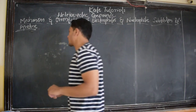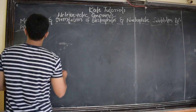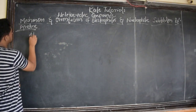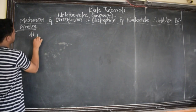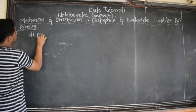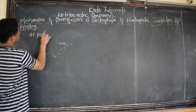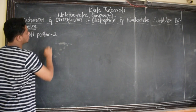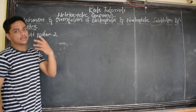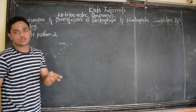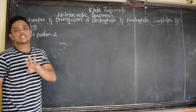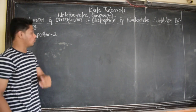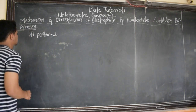I told electrophile will attack at position 3. Why is this so? What happens if it attacks position 3 or position 4? Let us see.